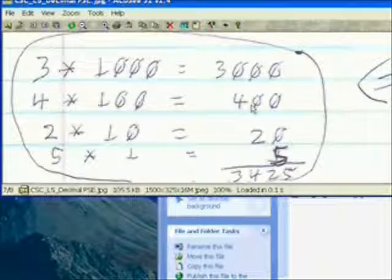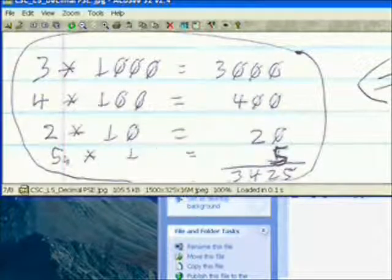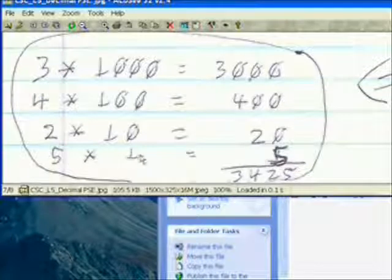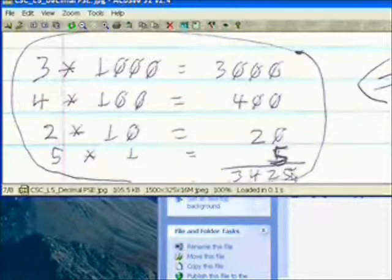So when we add these all together we get three thousand four hundred and twenty-five. So this power series expansion we've been using all our life, and probably most of us are totally unaware of it, which I think is pretty cool. Makes you wonder how much else in life you're totally unaware of.